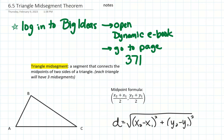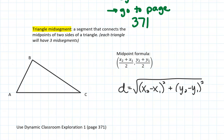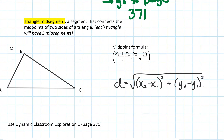In this lesson we're doing the triangle mid-segment theorem. A triangle mid-segment is a segment that connects the midpoints of two sides of the triangle. To find those midpoints, we use the midpoint formula where you average the x-values for the endpoints and average the y-values for the endpoints. That will help us find the midpoint of each side, and then if we connect those, we get mid-segments.